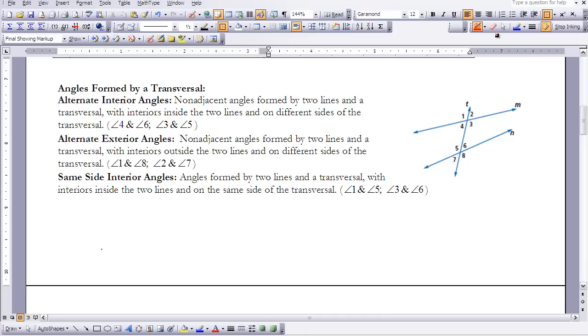And then the last set of angles we want to talk about are called the same side interior angles. 4 and angle 5 would be same side, and 3 and angle 6 would be same side interior angles. So now you have 4 sets of angles, 4 types of angles that you need to be able to identify when you see 2 lines being intersected by a transversal.